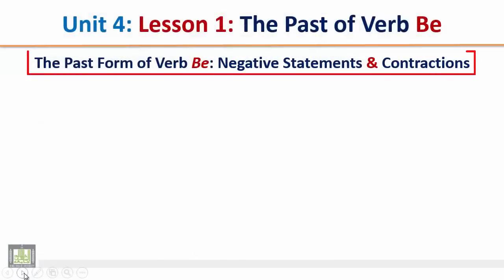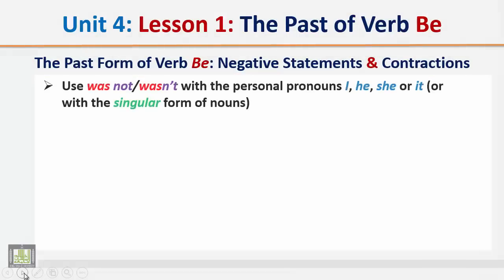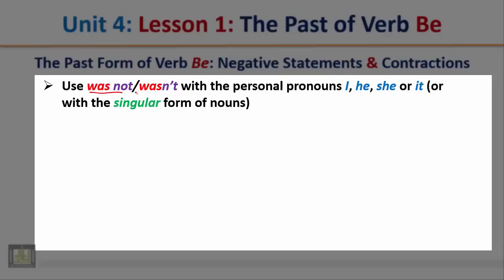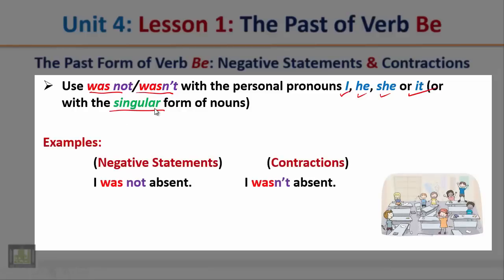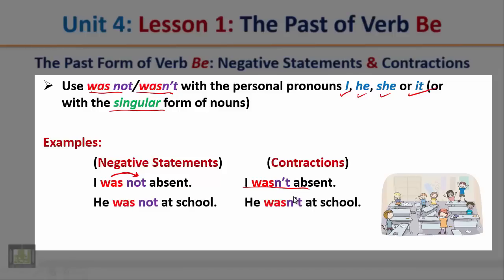The past form of verb be — negative statements and contractions. Use 'was not' or 'wasn't' with the personal pronouns I, he, she, it, or with the singular form of nouns. Examples: 'I was not absent.' We use the word 'not' after the verb. The contracted form: 'I wasn't absent.' 'He was not at school.' The contracted form: 'he wasn't at school.'